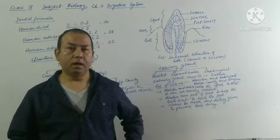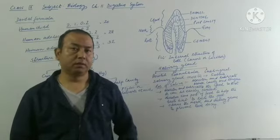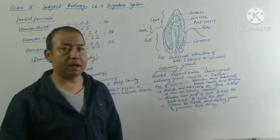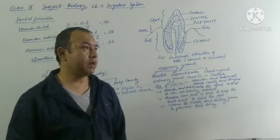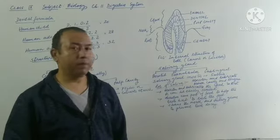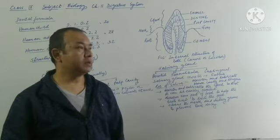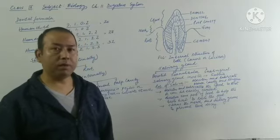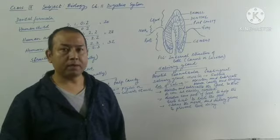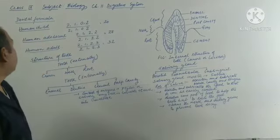Good morning class 9. We will be starting today again a new topic in the same chapter. Yesterday we started chapter number 11, the digestive system. So far we have learned about the mouth, the tongue, the lips, and different types of teeth. Today we'll be learning about dental formula, the structure of the tooth, and we'll try to complete the topic of salivary glands.